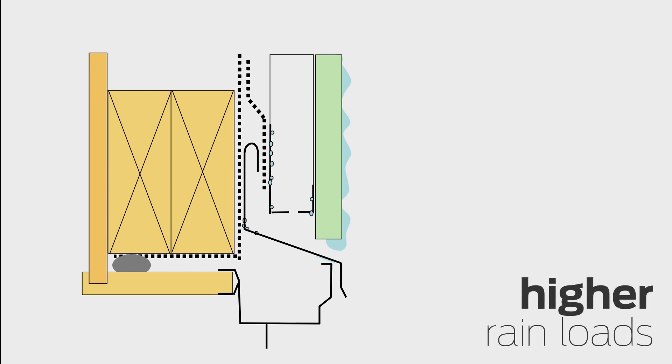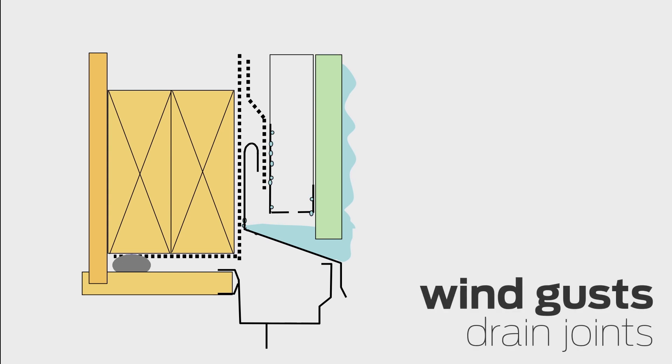But even higher rain loads tend to totally block that opening, allowing the joint to flood. Luckily, winds tend to come in gusts and this allows the joint to drain out.